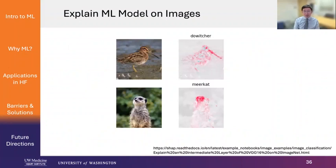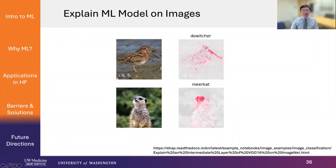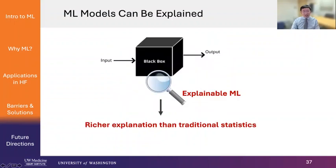The SHAP method can also explain machine learning models applied on images. I'm showing an example from the internet: using the same SHAP model, you can explain why the machine learning model thinks this animal is a shoveler because of the long bill, and why this is a meerkat — using the eyes and nose to make that prediction. I hope I've convinced you that machine learning models are no longer a black box, and with explainable machine learning methods, you can actually have richer explanations than traditional statistical models.